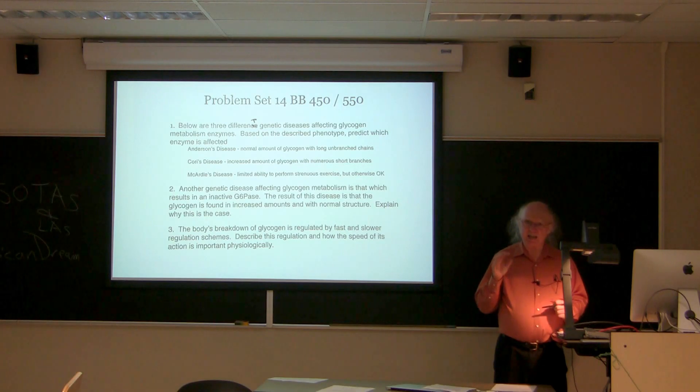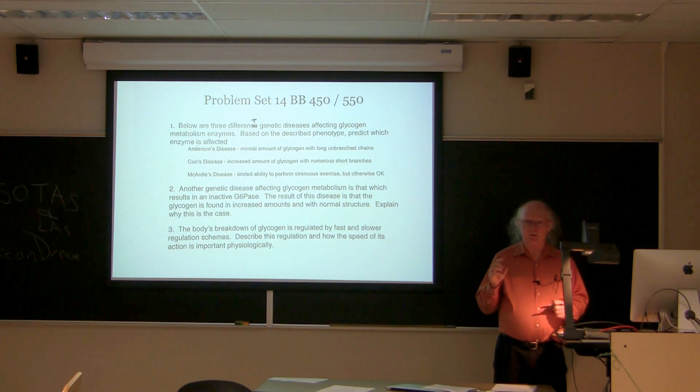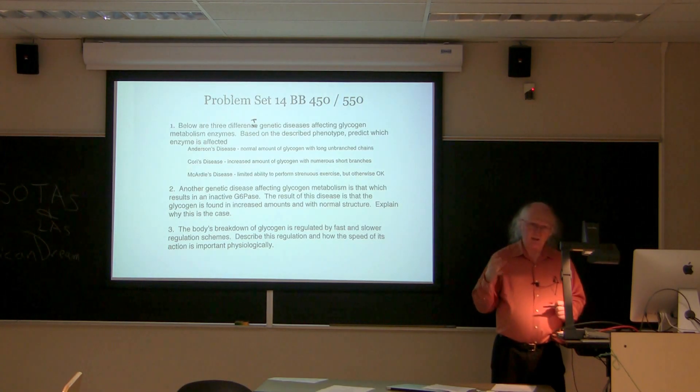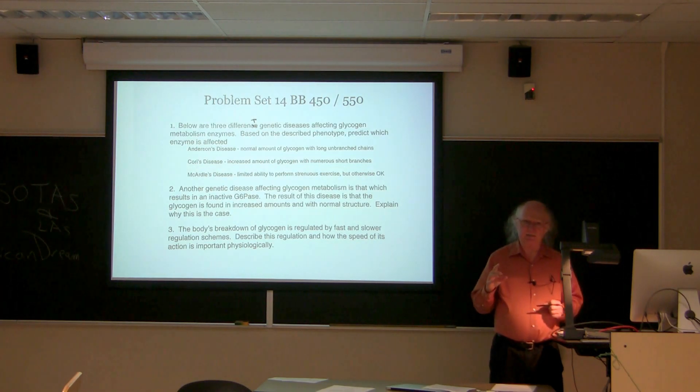Glycogen phosphorylase A is inhibited, that is, it's converted into the T state by the molecule glucose. If a muscle cell is at rest, it's going to have a little bit of glucose present. It's going to have what little amount of glycogen phosphorylase A that's present binding to that glucose and existing in the T state.